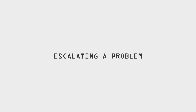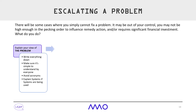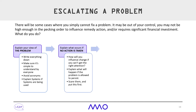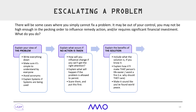Escalating a problem: what happens when you can't fix a problem? The problem may be out of your control, environmental, or you may not be senior enough to influence the remedy required. Here are some steps: explain your view of the problem clearly so anyone can understand it; explain what occurs if no action is taken; and explain the benefits of your proposed solution if you have one, before taking it to your manager.